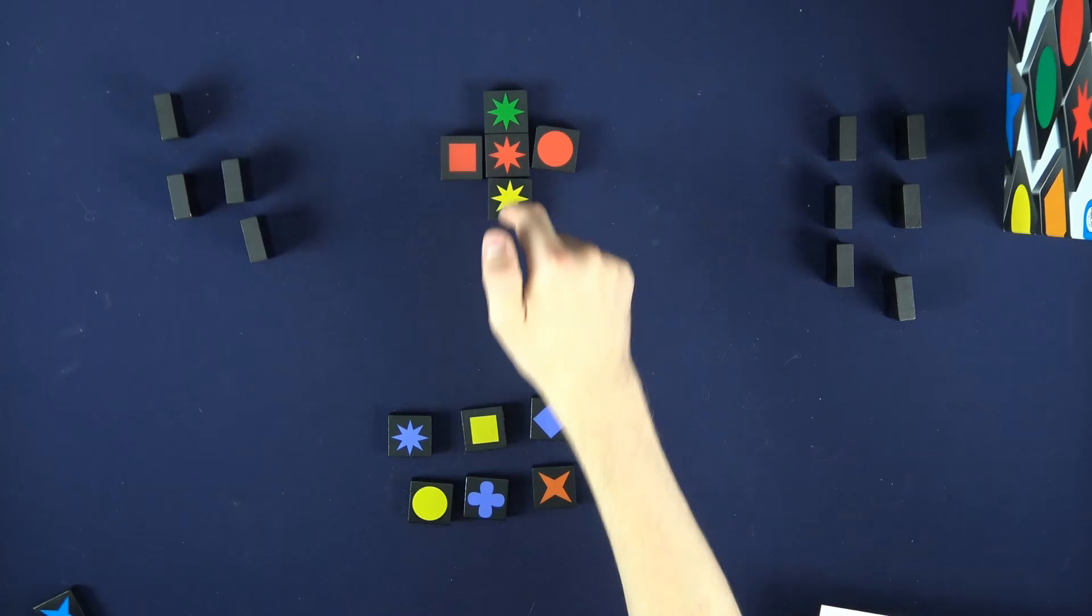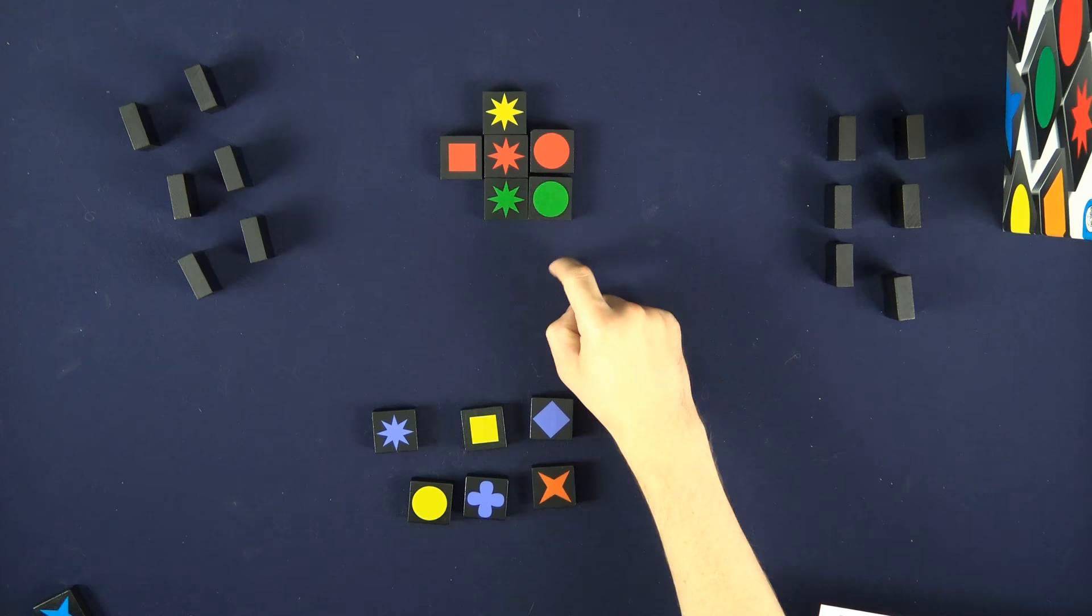If you place a tile that fits into two rows you get points both ways, so this tile would be worth two and two, so four points total.